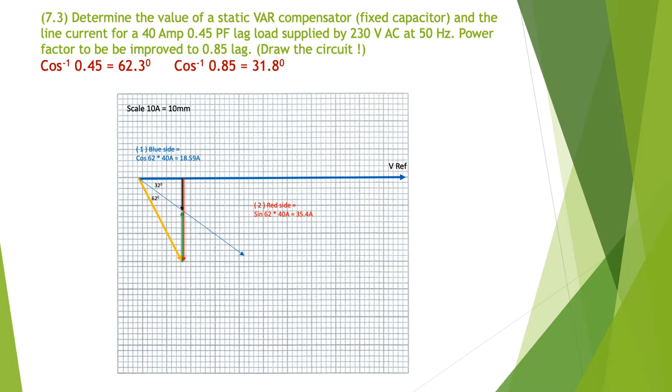The red side is sine of 62 degrees multiplied by 40, which tells me this red one is 35.4 amps long. I get the black side by taking tangent of 32 degrees multiplied by 18.59, which tells me the black side is 11.6 amps.